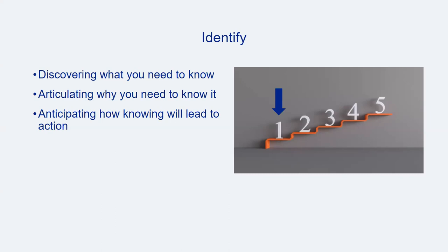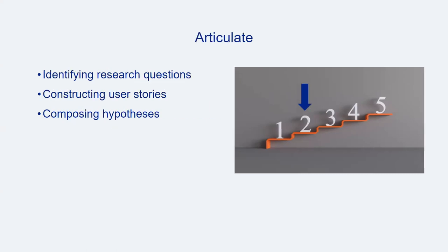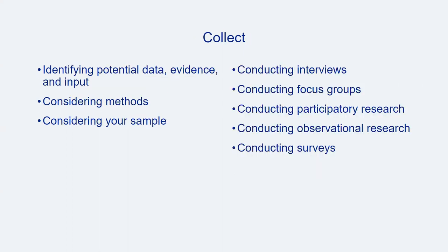The five stages forming the organizational structure of the toolkit are: Identify, Articulate, Collect, Organize and Analyze, and Act. In the Identify module, materials help library assessment practitioners discover what they need to know, why they need to know it, and how anticipating what is needed will ultimately lead to action. In the Articulate module, practitioners learn to identify and construct research questions, user stories, or hypotheses to guide an assessment project. The Collect module focuses on identifying potential information to be gathered, understanding the wide range of assessment methods and tools available, determining an appropriate sample size, and provides starting places for common assessment strategies including interviews, focus groups, participatory and observational research, and surveys.